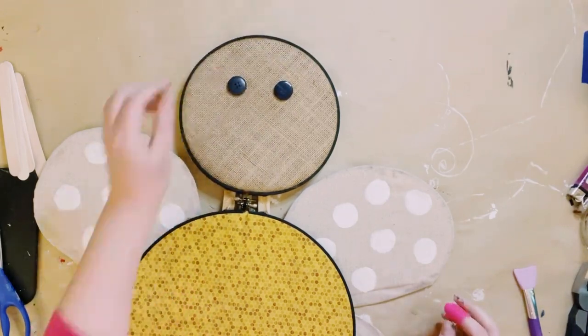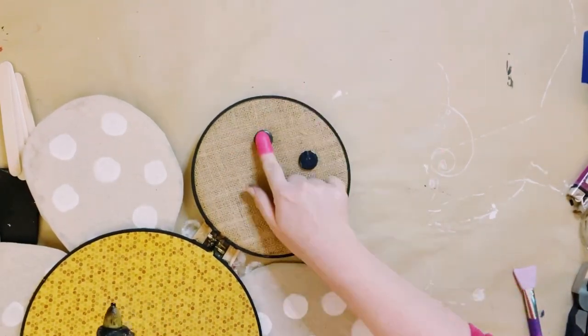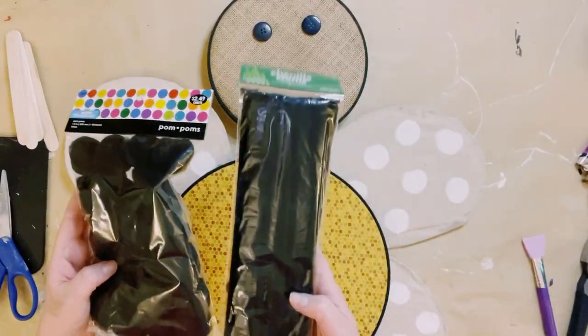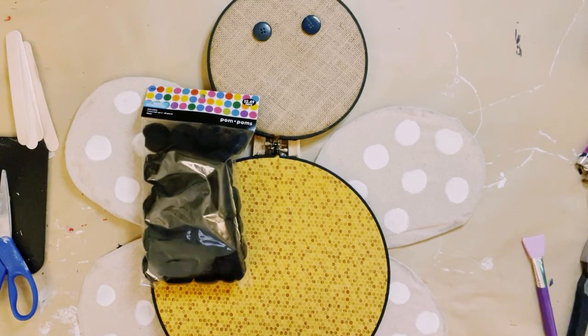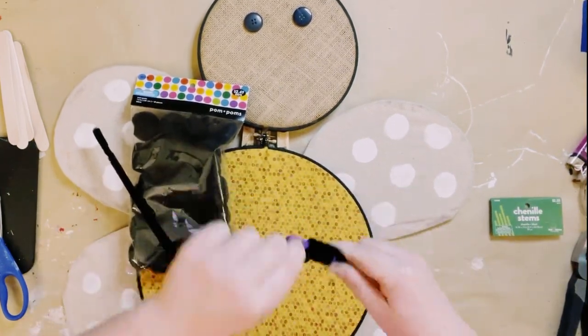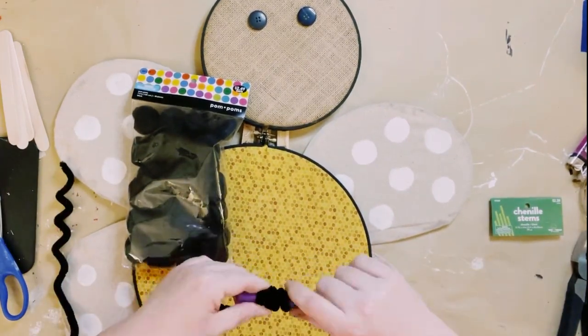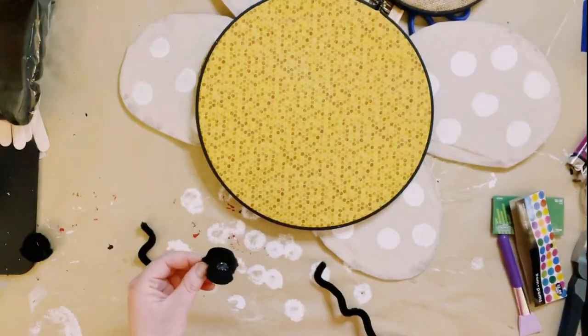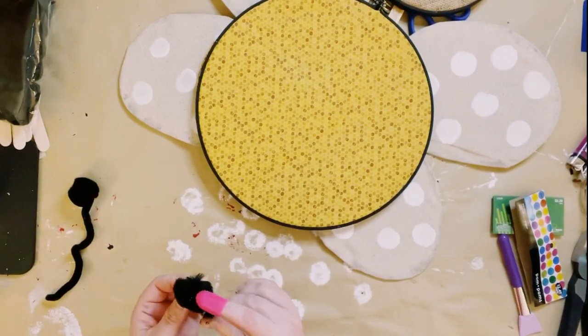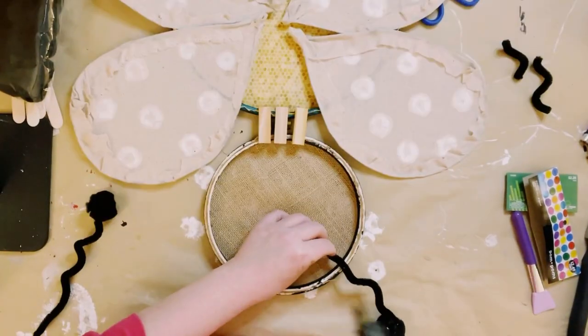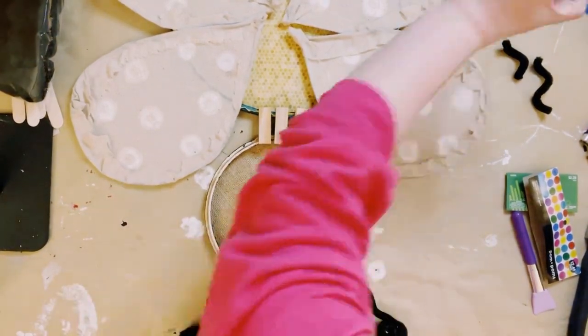Next, I'm just using some black buttons for the eyes, just hot gluing those on the smaller embroidery hoop. Then I got these black pom-poms and black pipe cleaners. I'm just twirling the pipe cleaners around something just to give it that nice curly look, and then hot gluing the pom-poms right at the top. Go ahead and just hot glue those right at the top of the smaller embroidery hoop.